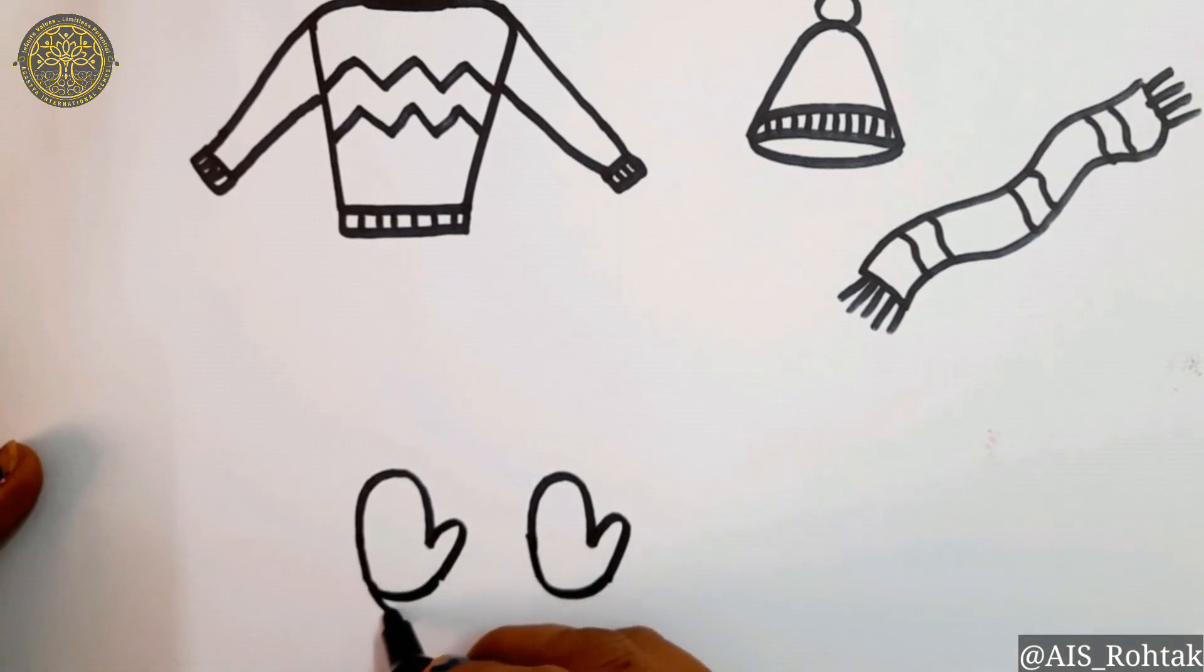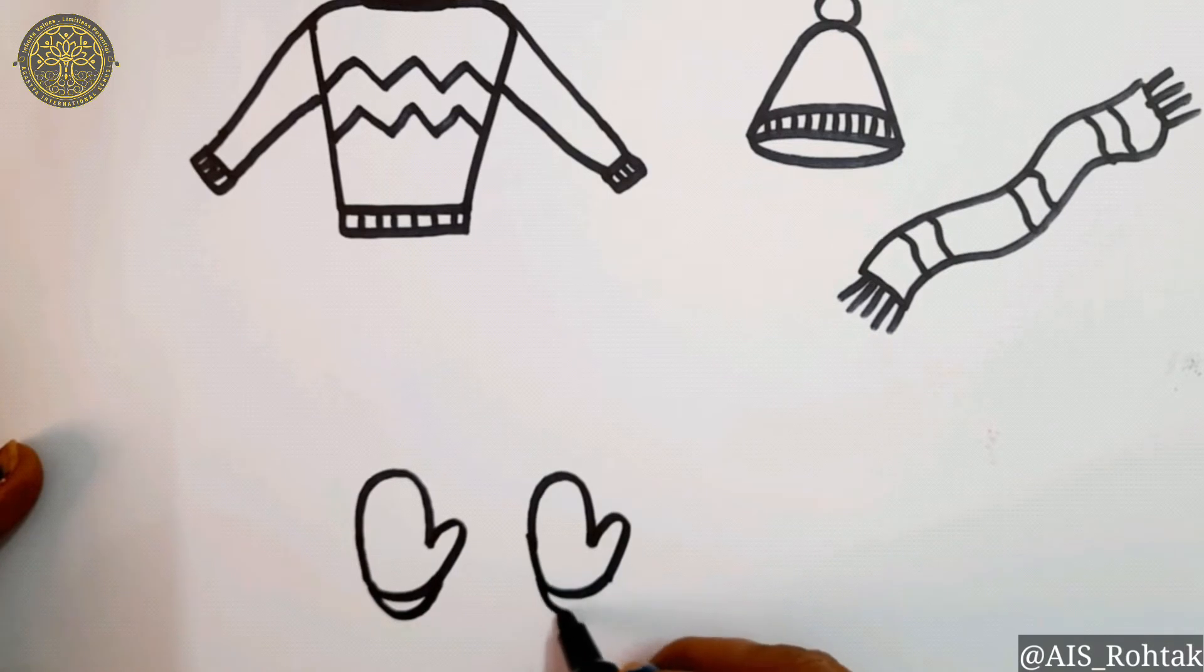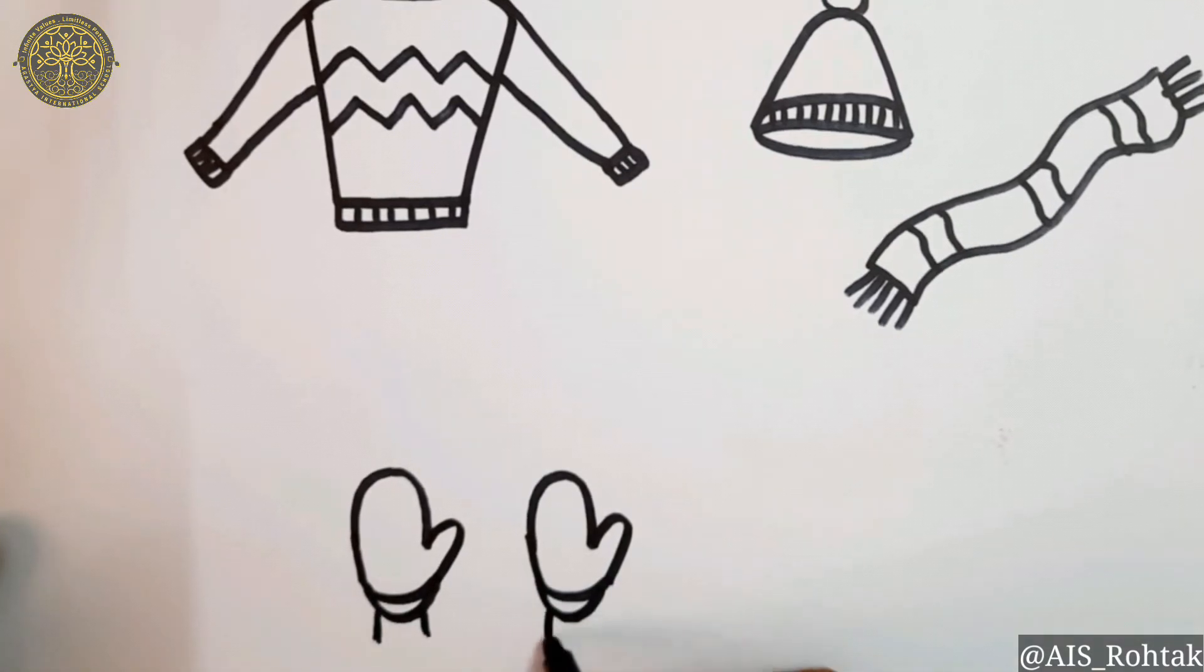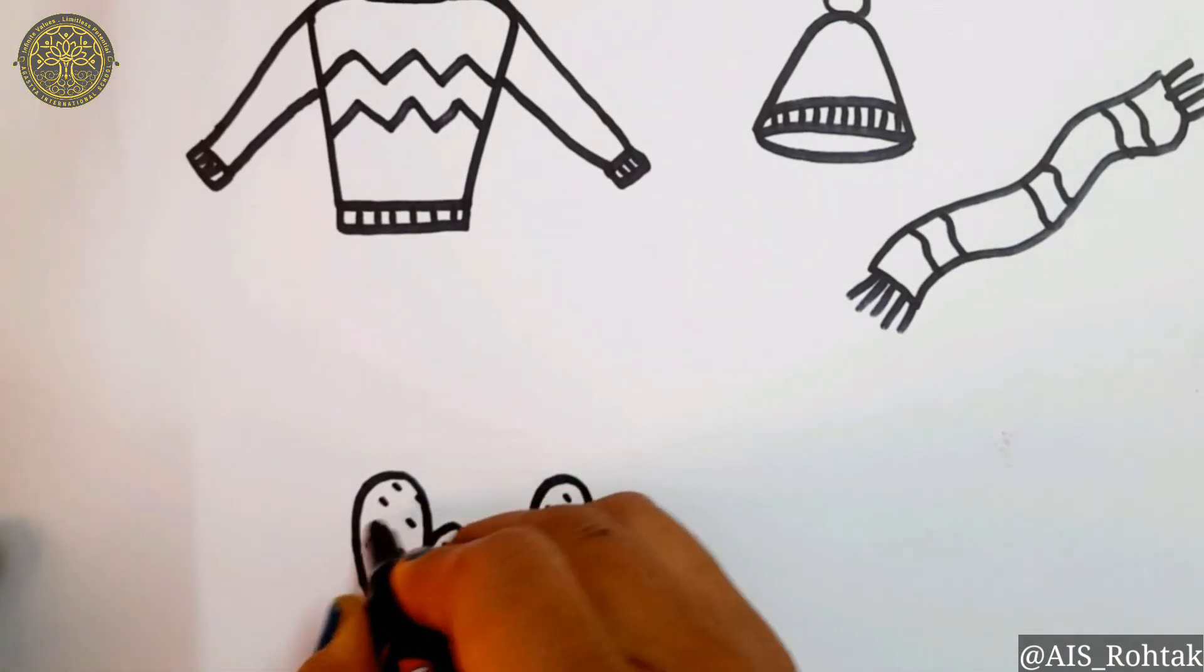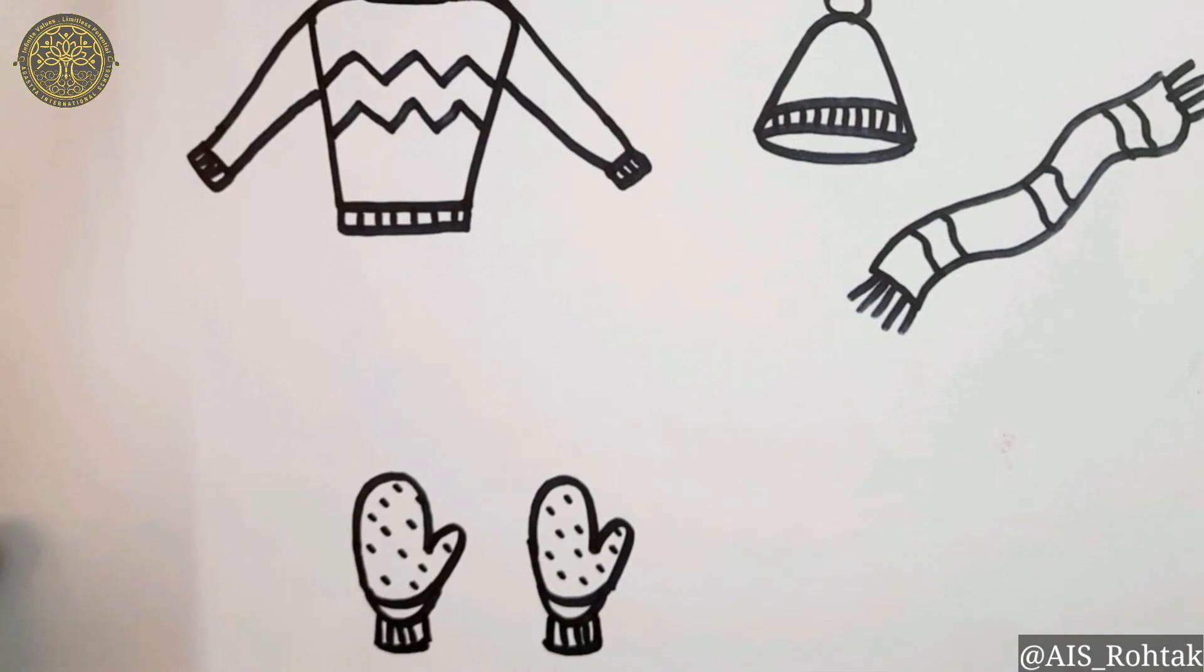One more line. Now draw standing lines and join it. Draw the design in the gloves like this. Just draw some standing lines and dots in the gloves like this. Our gloves are ready.